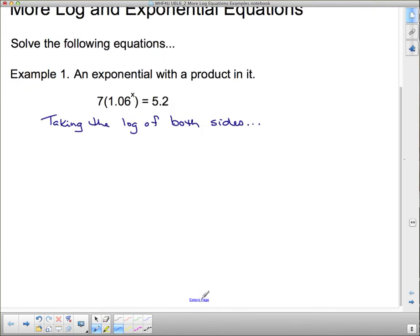In the first step, all that amounts to is writing log in front. Log of 7 times 1.06 to the x, and that's all inside this logarithm, and that equals the log of 5.2. Remember, this is log base 10, so when we use the calculator eventually, we're using log base 10.